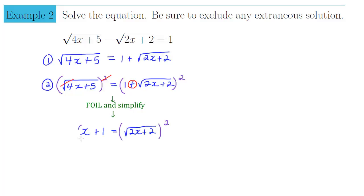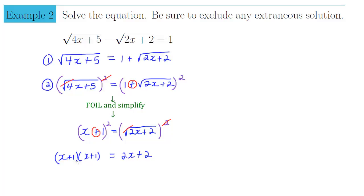Squaring both sides again: on the right side, the square and the square root cancel, leaving 2x + 2. On the left side, because of the plus sign, it's another FOILing problem — a binomial squared. (x+1)(x+1) FOILs to x² + x + x + 1, and collecting like terms gives x² + 2x + 1.